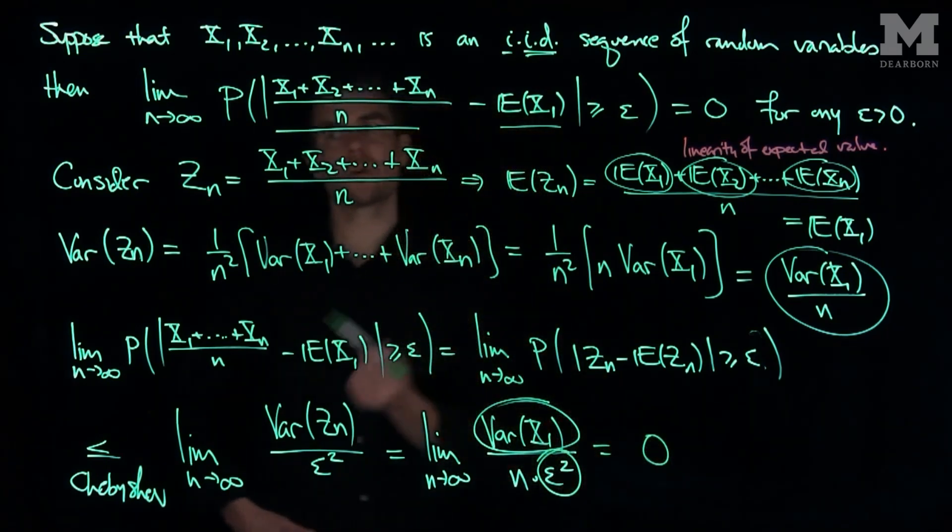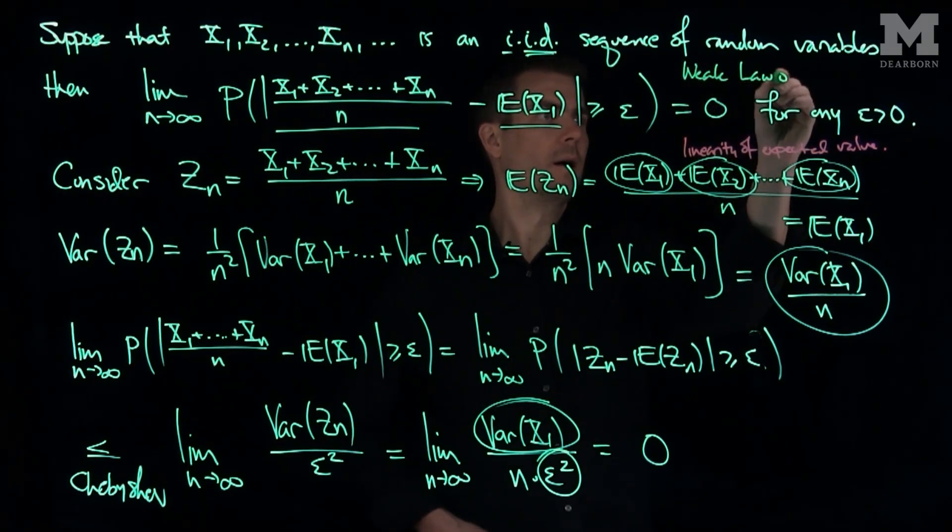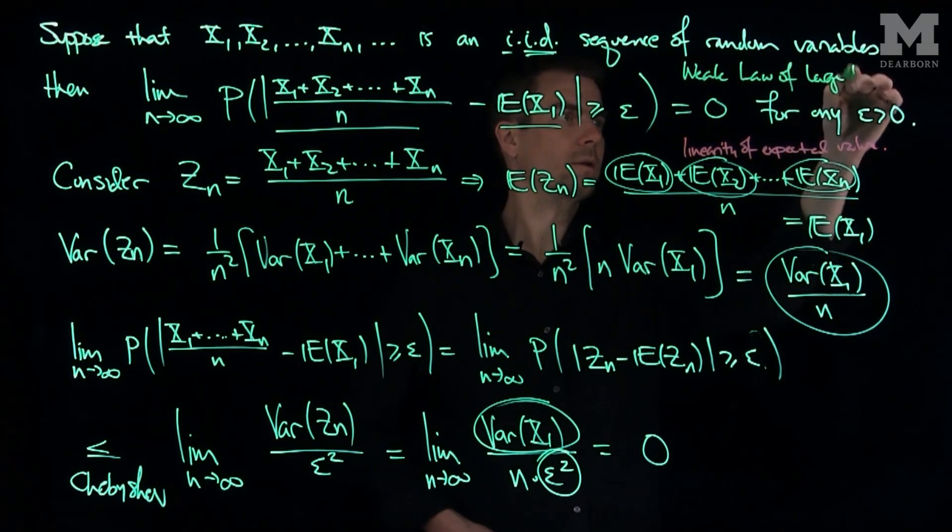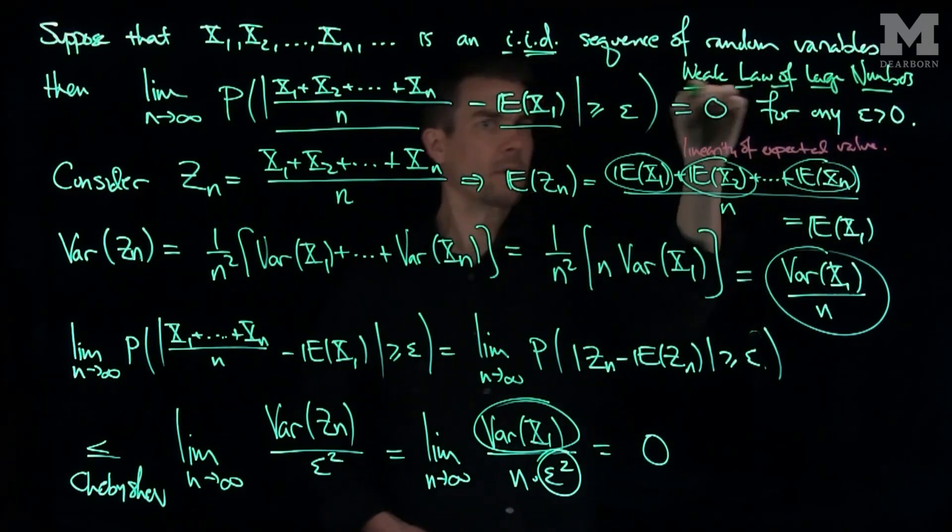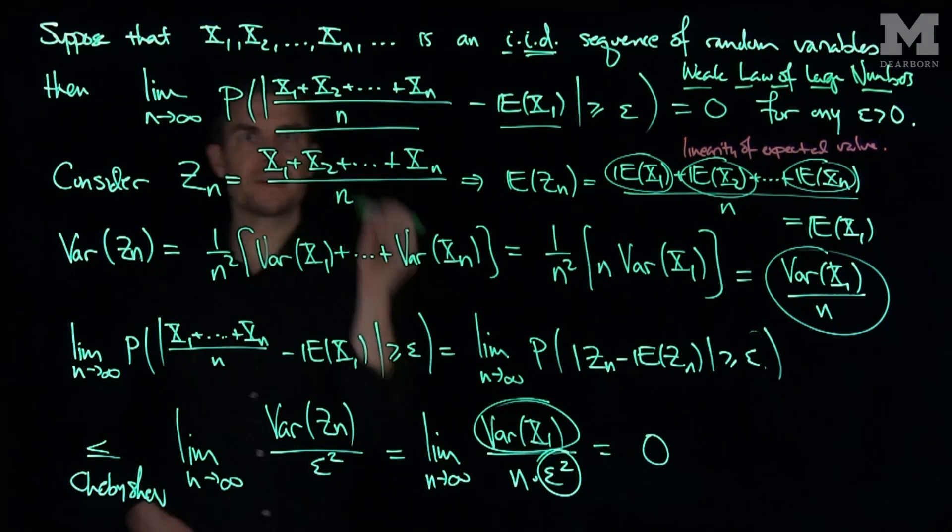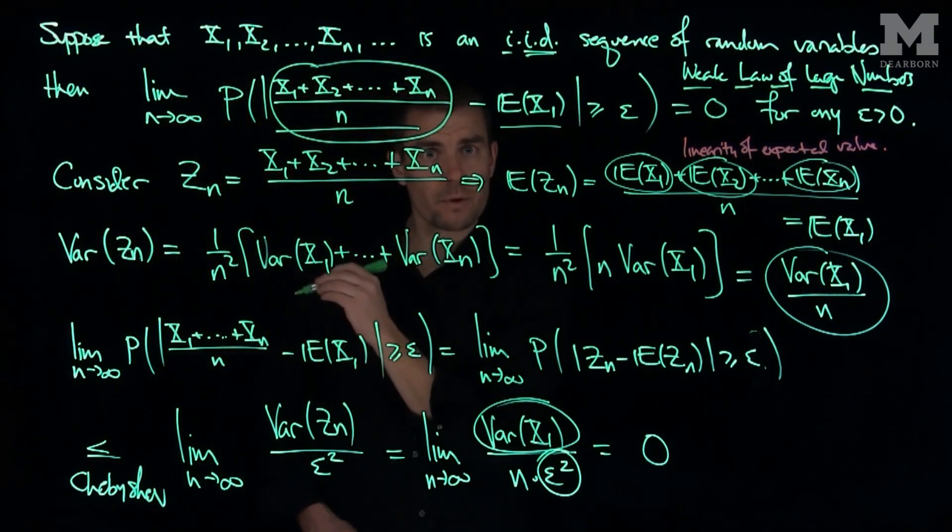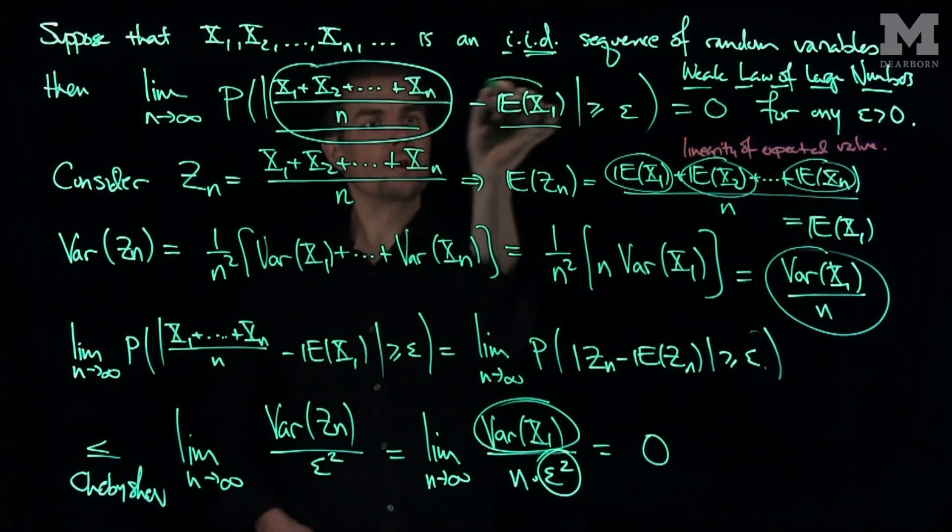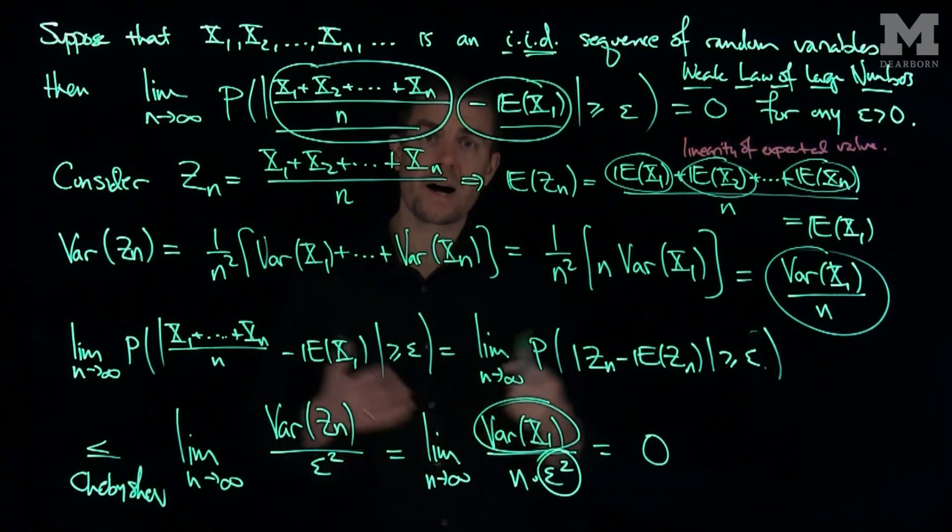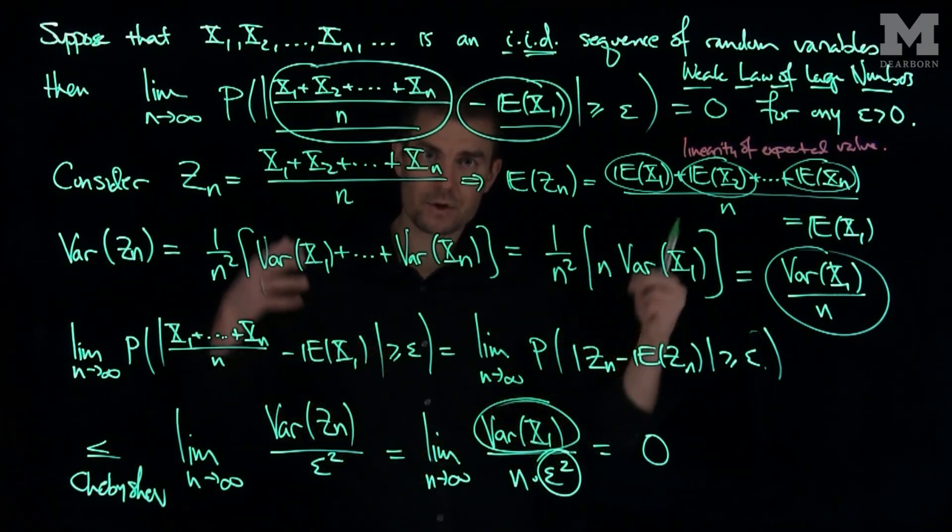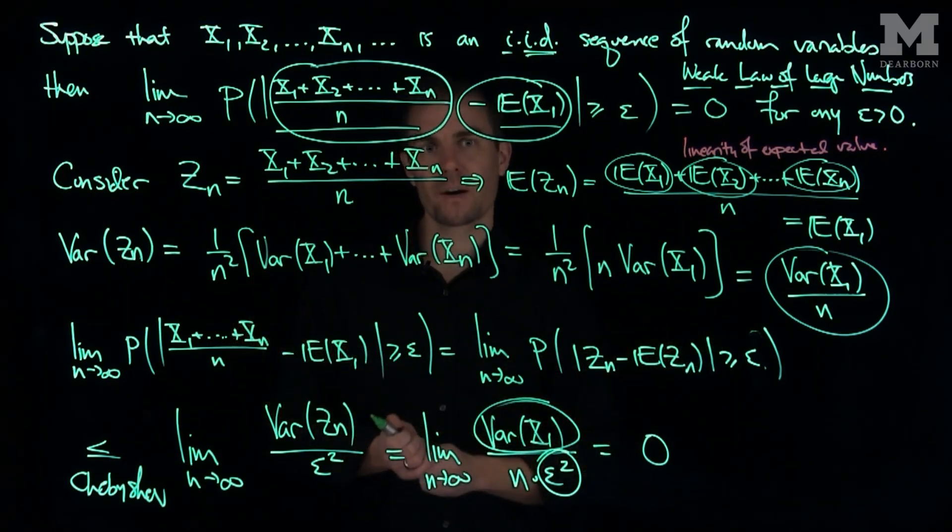So with this, and this is referred to as the weak law of large numbers. And what the weak law of large numbers says, it says the statistical average of the first n random variables subtracted off from its mean gets very, very small in probability. So on average, the statistical average converges to the expected value in the probabilistic sense. Thank you very much.